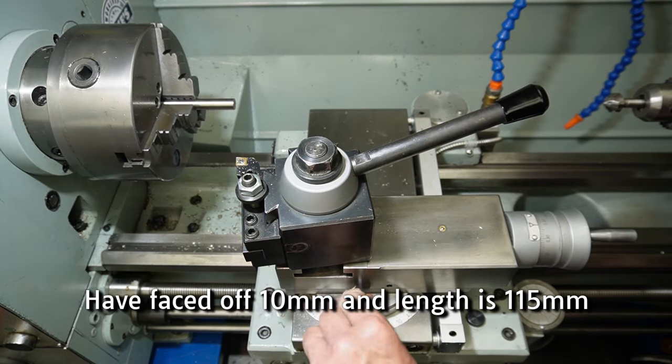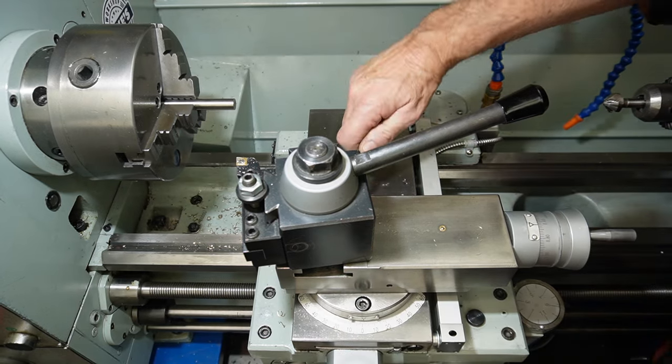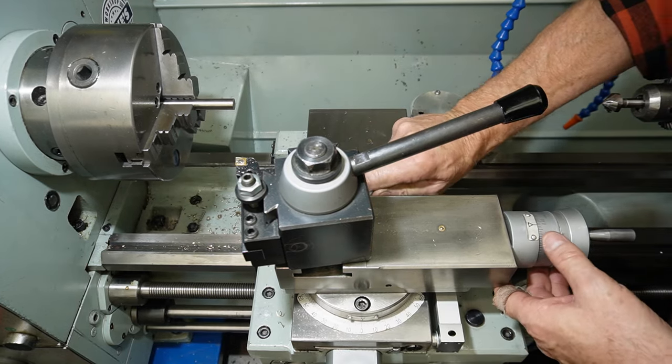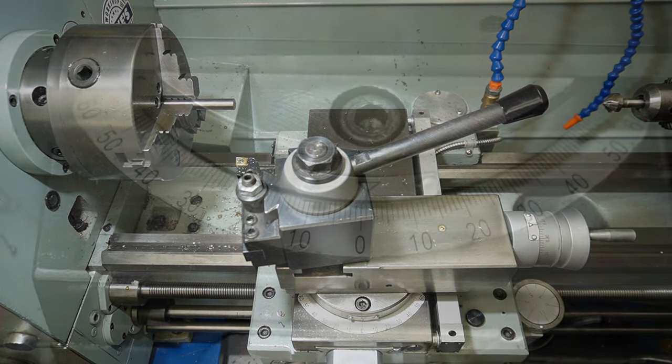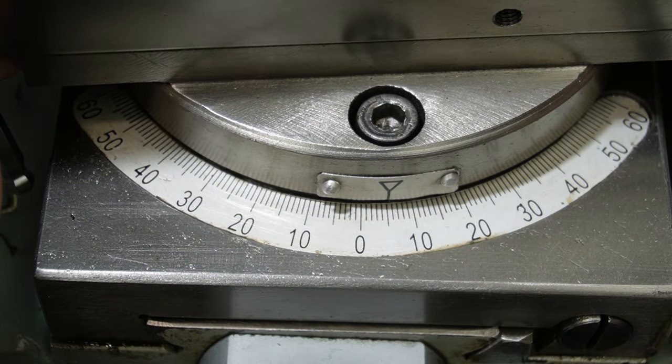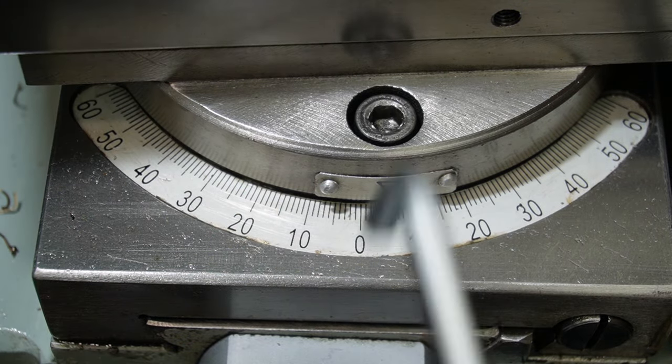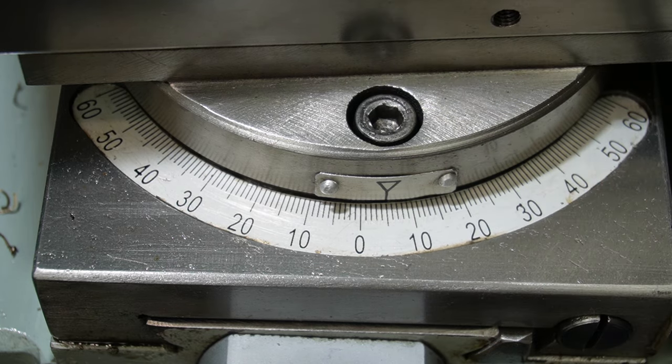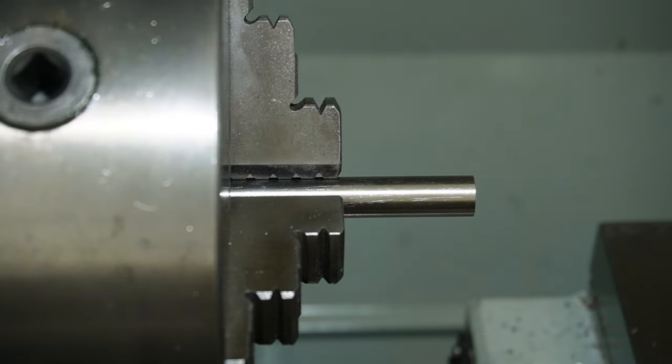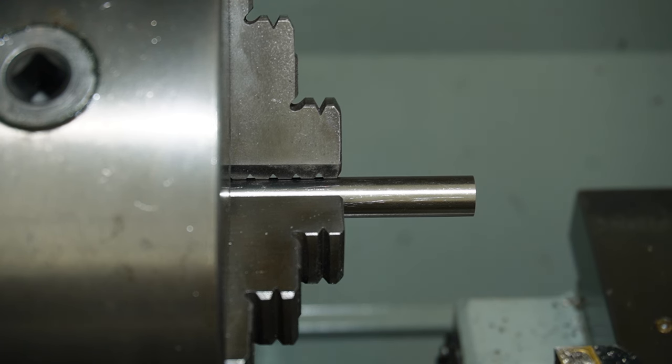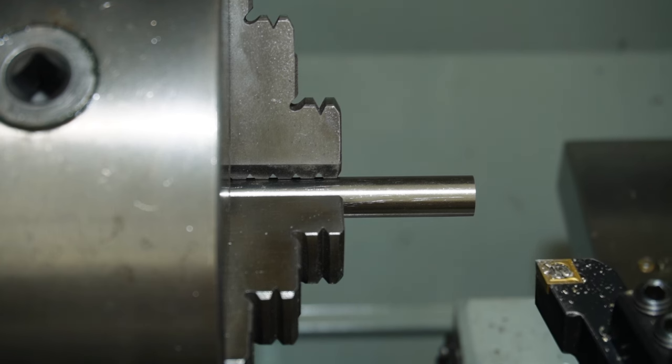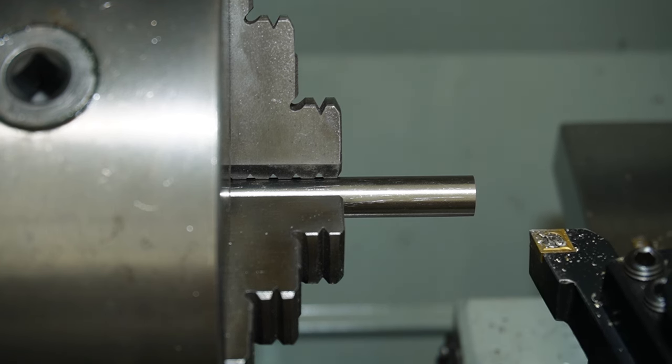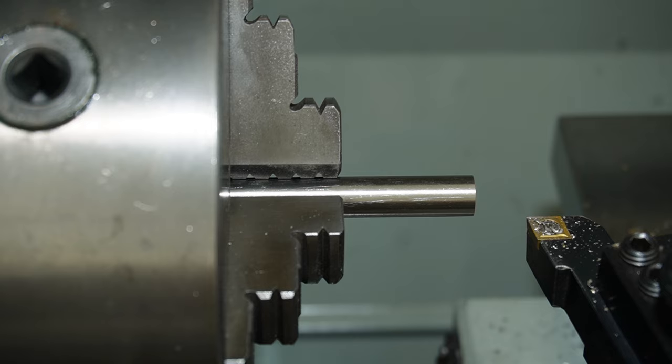I'll now set my compound to 5 degrees. So this angle is not critical at all. It's so that the end tapers down where we're going to get close to the wire. I want about, I mean it's only about 4mm flat left on the end.